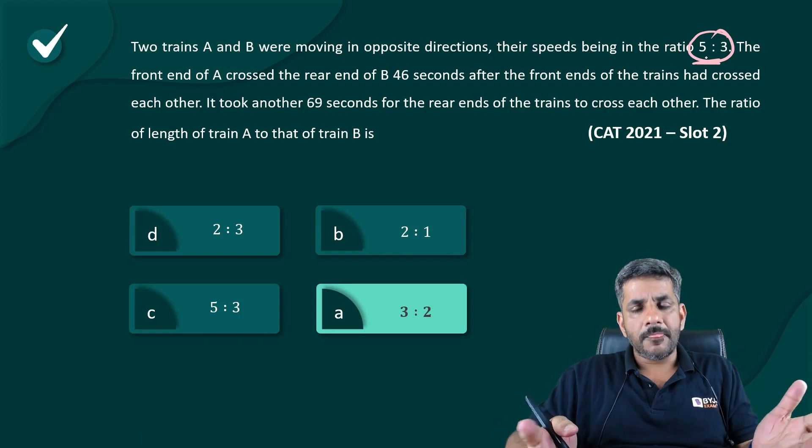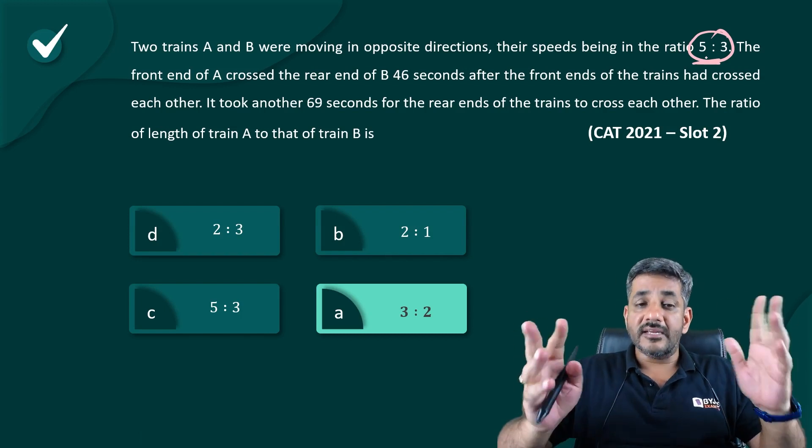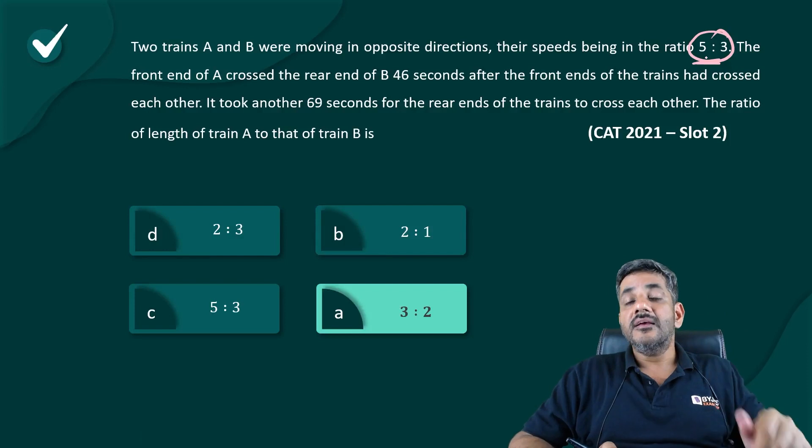Even if it was 50 is to 3, even if it was 5 is to 33, still in all those cases, my answer would have been 3 is to 2. And that's an aptitude way of solving it.